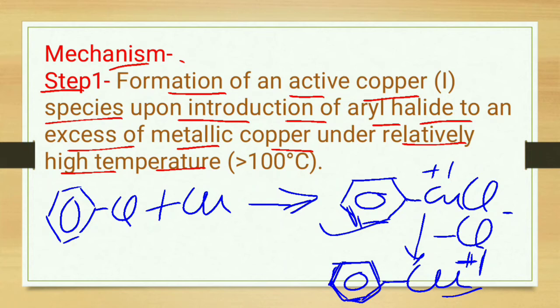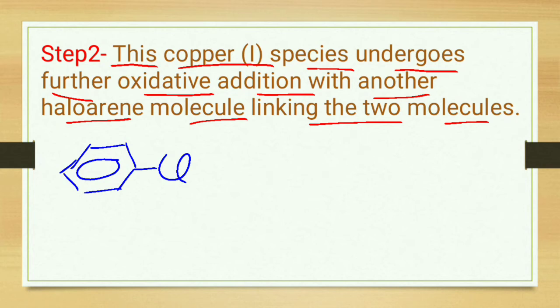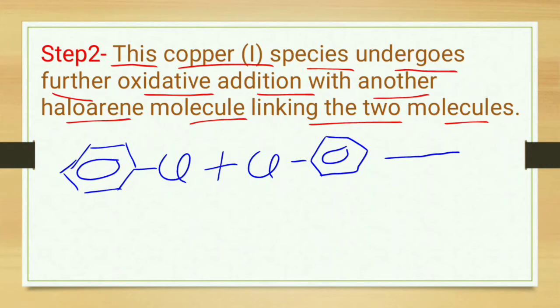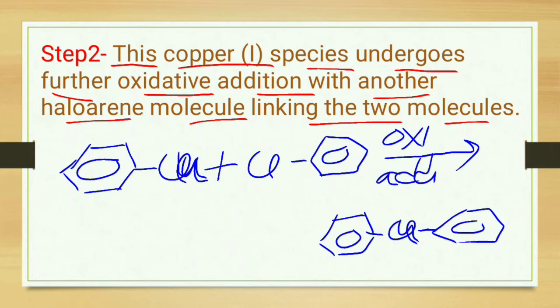The second step: this copper(I) species undergoes further oxidative addition with another aryl halide molecule, linking the two molecules. In this step, the copper(I) species is added with another aryl halide via oxidative addition, and it links two molecules — so by the help of copper, two aryl groups are linked with each other.